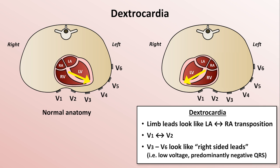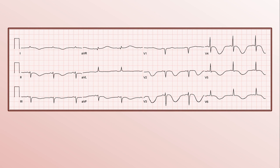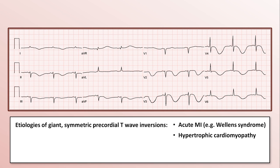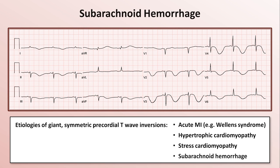An elderly person experiences loss of consciousness several minutes after the abrupt onset of a headache. Jumping right to the obvious, this EKG shows giant symmetric precordial T-wave inversions. The list of etiologies of this finding includes acute MI such as that seen in Wellens syndrome, hypertrophic cardiomyopathy, stress cardiomyopathy also known as Takotsubo cardiomyopathy, and the diagnosis in this case: subarachnoid hemorrhage.